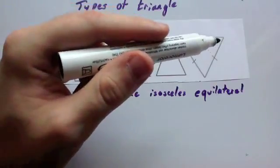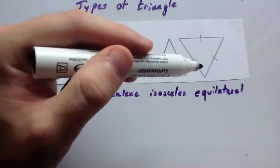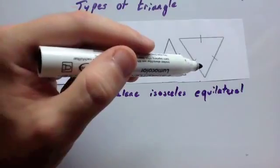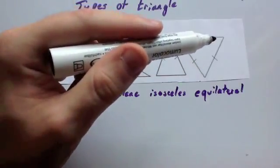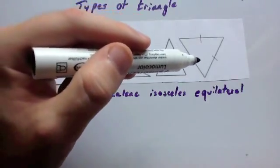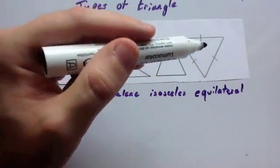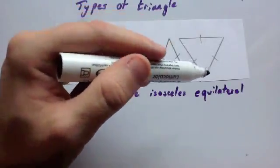Now, because the angles add up to 180, and there's three of them, if you do 180 divided by 3, you'll find the size of each angle, which would be 60 degrees. So that would be 60, 60, and 60. 60 plus 60 plus 60 is 180 degrees.